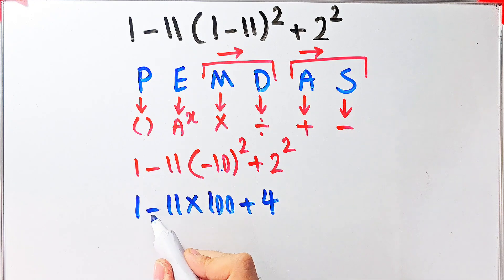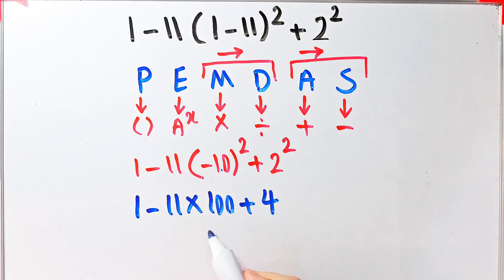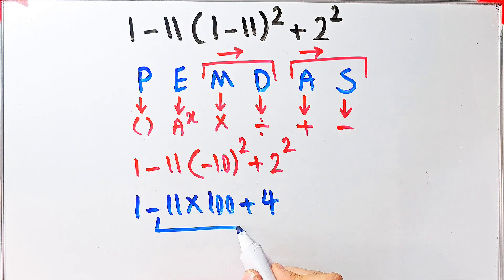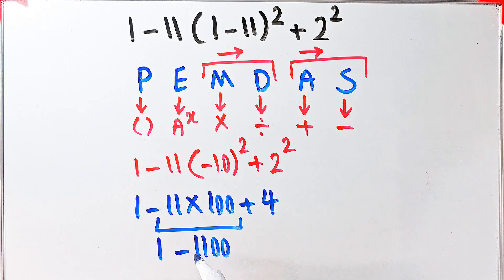Now we have subtraction, multiplication, and addition. We simplify the multiplication first: negative 11 times 100 equals negative 1100. Now we have 1 minus 1100, plus 4.